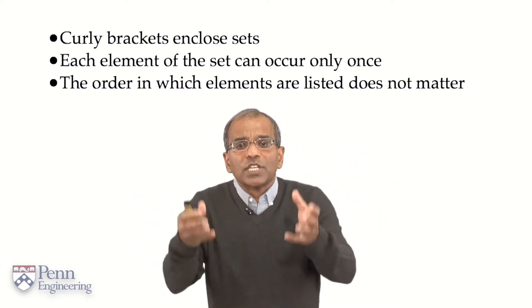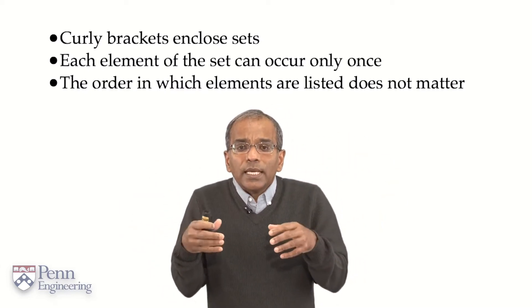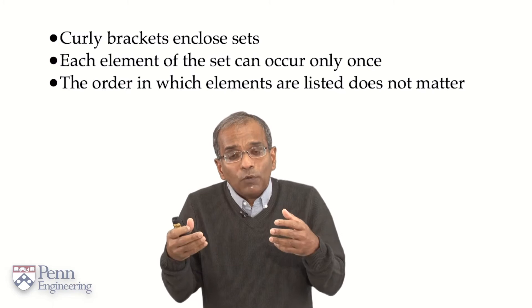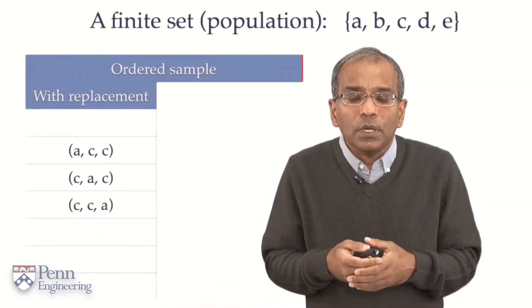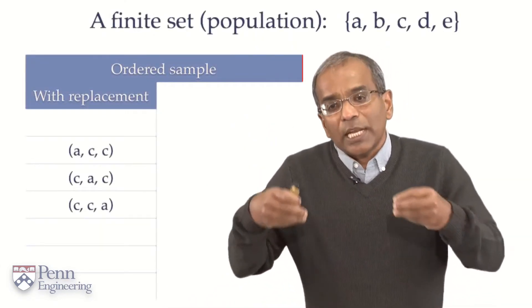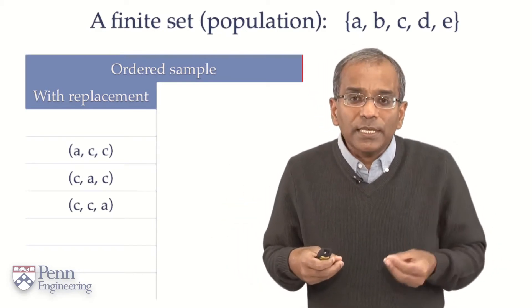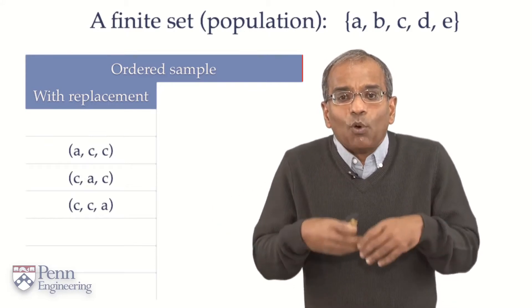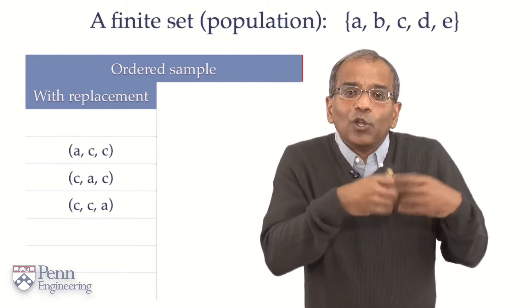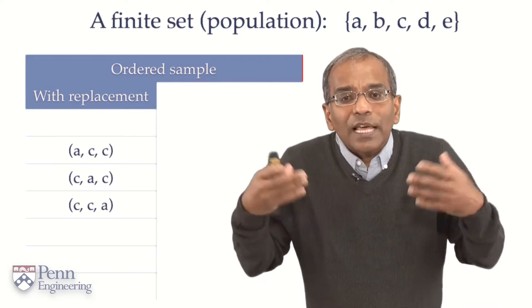Once you start with a set like this, a simple experiment would involve collecting elements from the set. This is called a sample. Here, for example, is an ordered sample of three elements. Select A, and then C, and then C again. For example, a bosque pair, an orange pair, and a yellow pair. Three different elements.